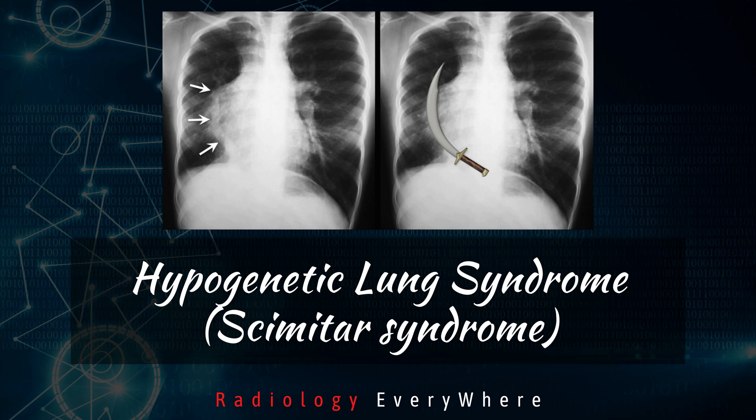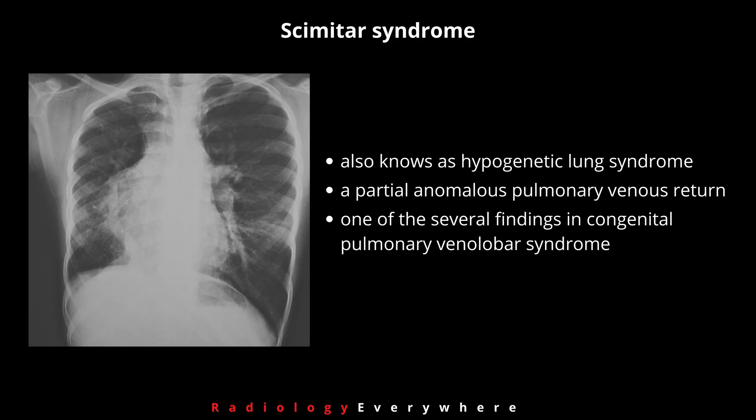Hello everyone, welcome to Radiology Area YouTube channel. Today we are going to talk about Scimitar syndrome. This is also known as hypogenetic lung syndrome. This is a type of partial anomalous pulmonary venous return and one of the several findings in congenital pulmonary venous syndrome.